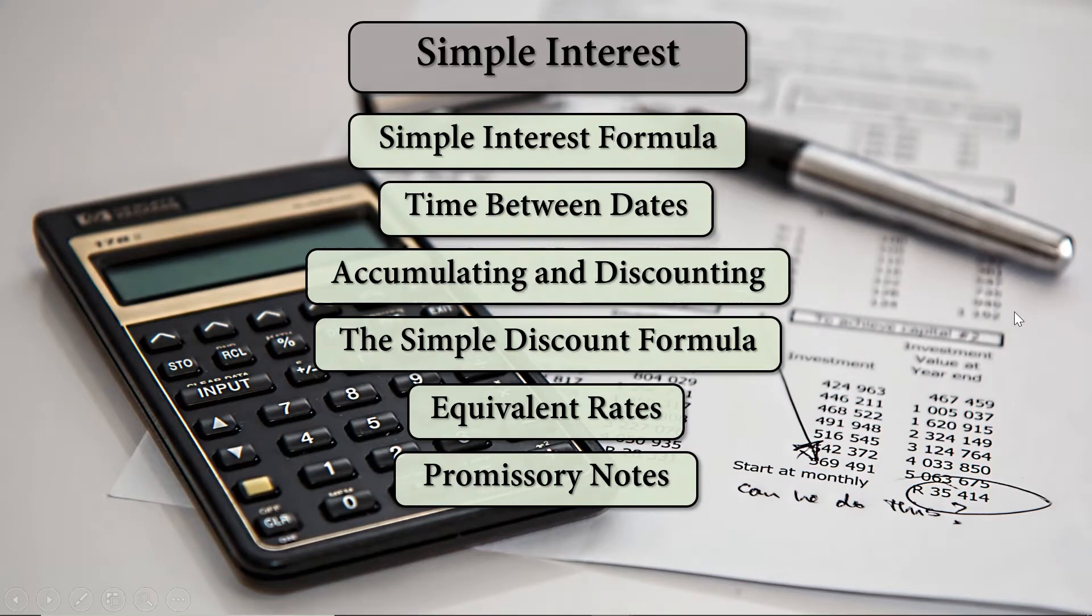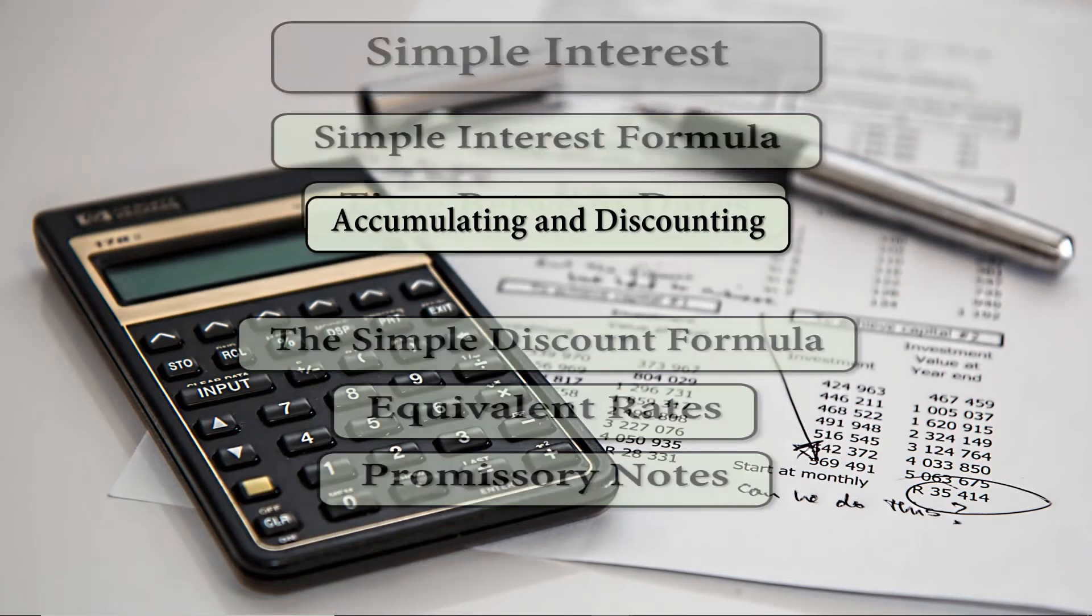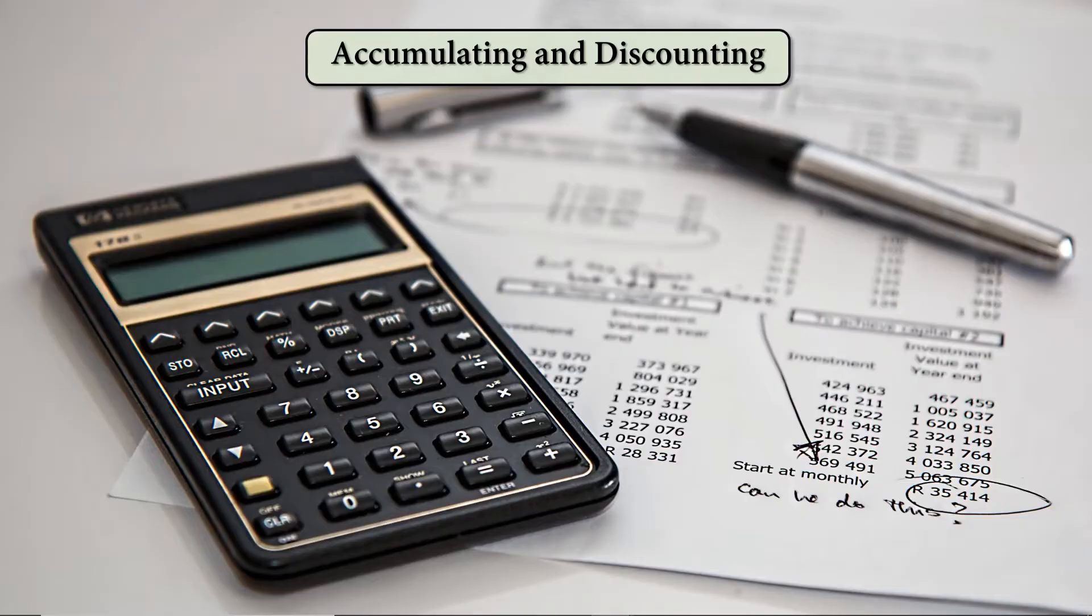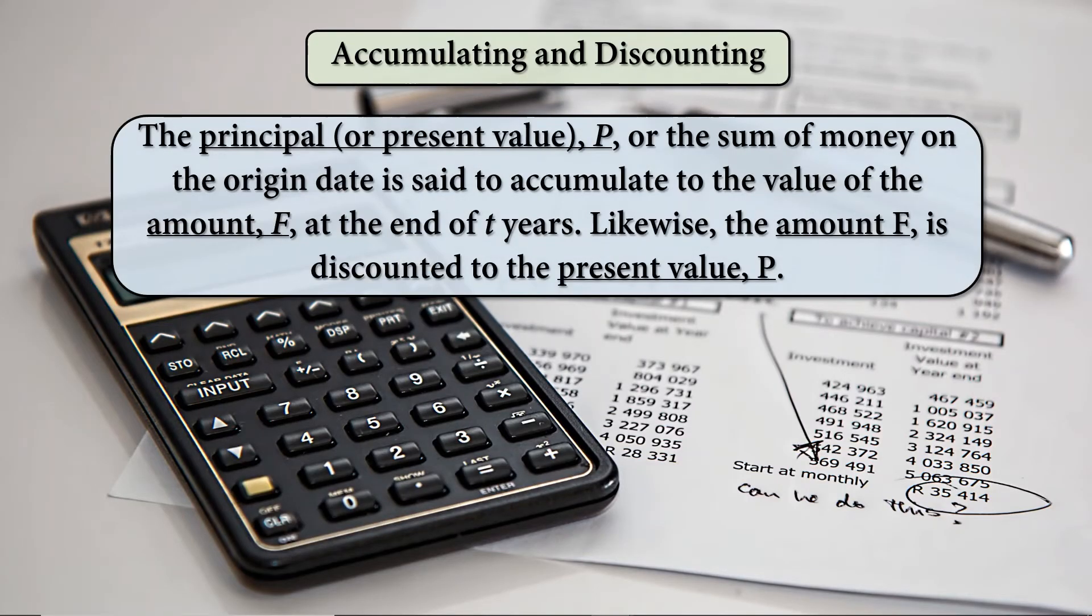Now let's start our third subtopic under the simple interest topic, which is accumulating and discounting. The principal or present value P, or the sum of money on the origin date, is said to accumulate to the value of amount F at the end of T years or number of years.